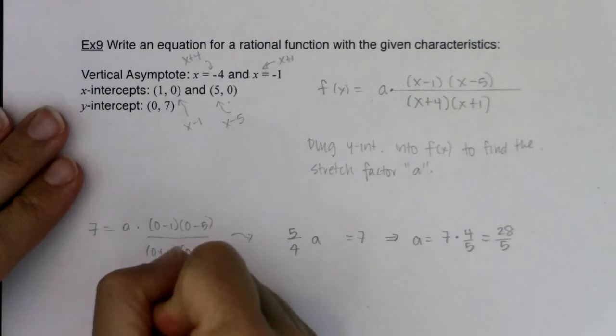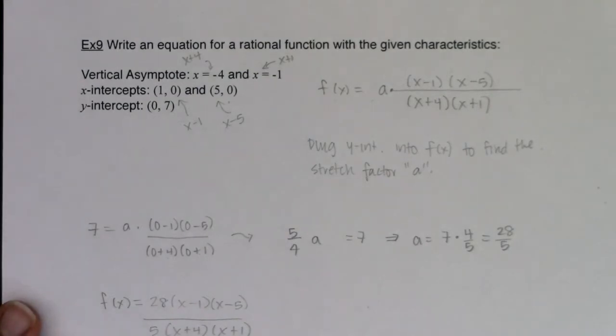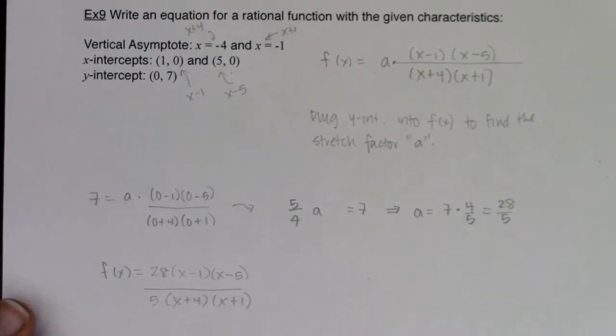So if I want to write up my function, I have f of x will be equal to, in my numerator, I'm going to have 28, x minus 1, x minus 5. And in my denominator, I am going to have a 5, and x plus 4, x plus 1. All right, now I am solid. Oh, let me scooch this up just so we can see it.